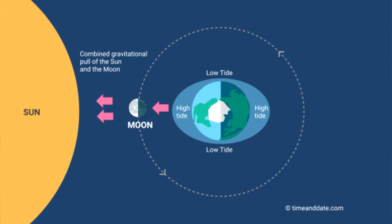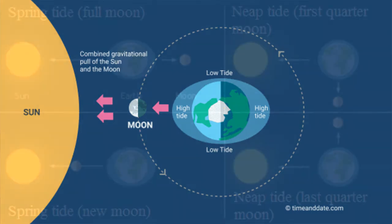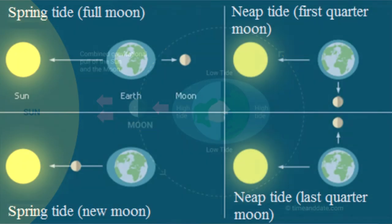Because the gravitational pull is pulling water from other parts of the world, there's a low tide in those spots. Because the Earth is always rotating and the moon is revolving around the Earth, we see a change about every six hours.